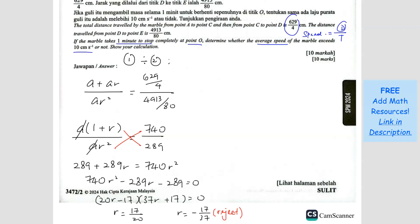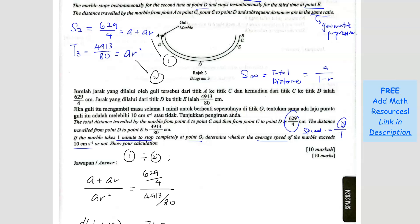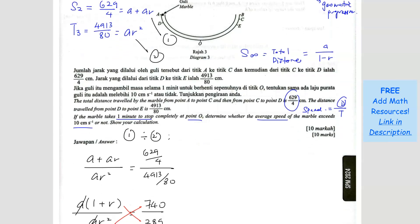But we have to reject the negative, because you can't have a negative distance. There's no way you get a negative distance, so you cannot use the negative R. We only use 17 over 20. So when we have R, we can straight away find A. I use the second equation: 4913 over 80 equals AR square, where R is 17 over 20 square. So A equals 4913 over 80 divide by 17 over 20 square. A should equal 85 cm. So this is the A and R.